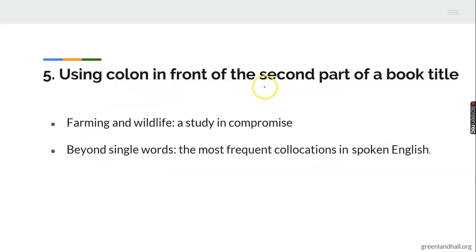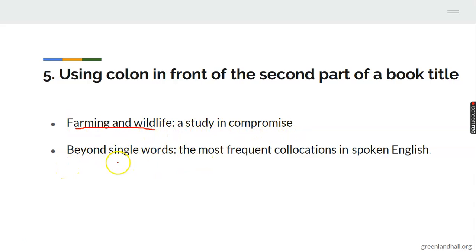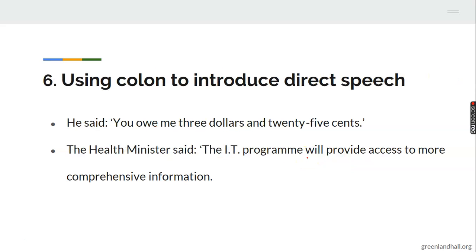Number five: using a colon in front of the second part of a book title. For example: 'Farming and Wildlife: A Study in Compromise.' Another example: 'Beyond Single Words: The Most Frequent Collocations in Spoken English.' The colon separates the main title from its subtitle.